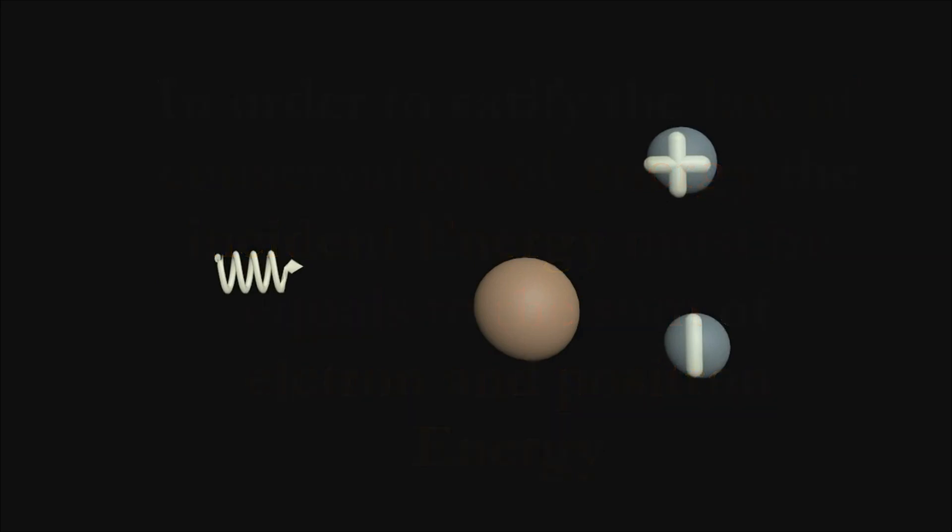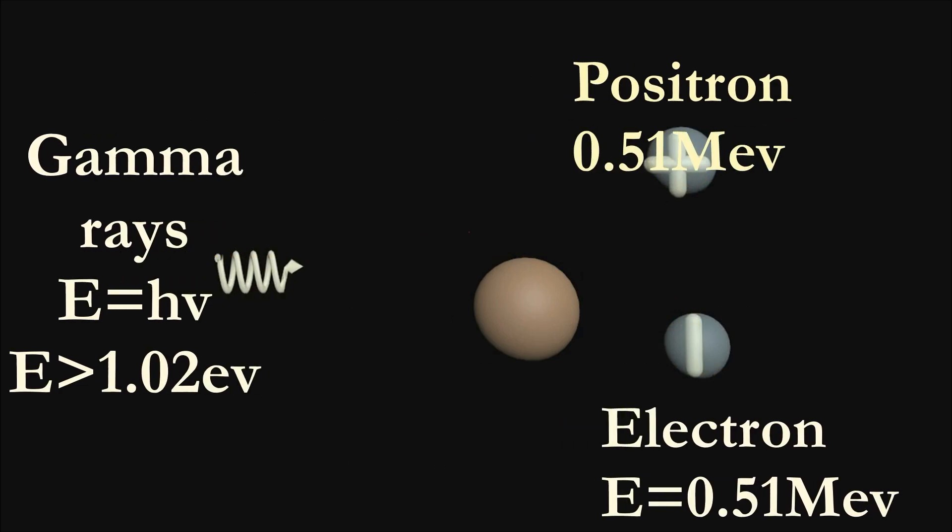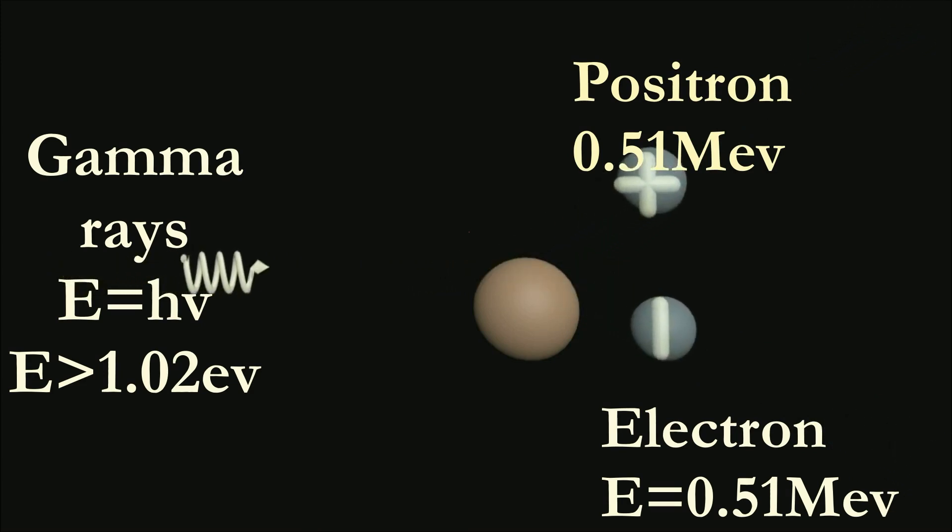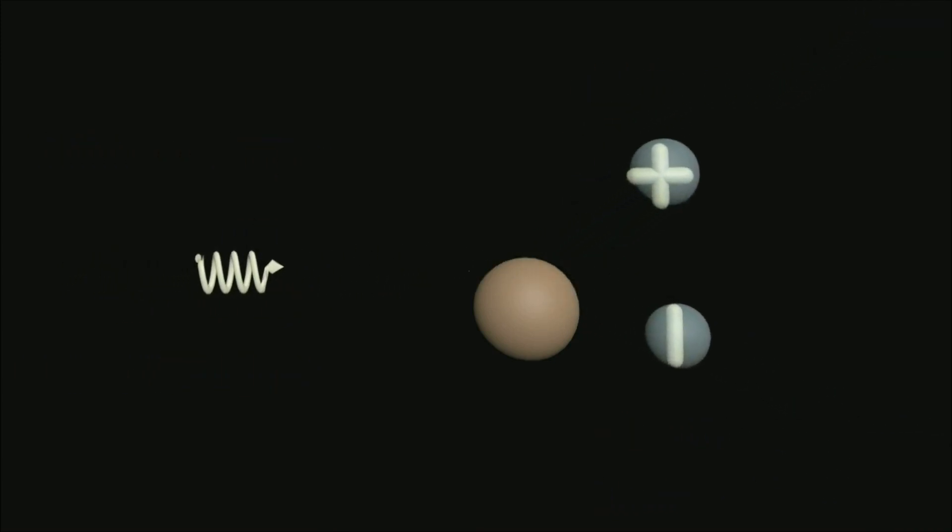For the law of conservation of energy, we know that the sum of all energies in this process must be conserved. The electron has energy 0.51 mega electron volt, and the positron has energy 0.51 mega electron volt. The sum of electron and positron energy equals 1.02 electron volt. To satisfy the law of conservation of energy, the incident photon or gamma ray must have energy greater than 1.02 electron volt.